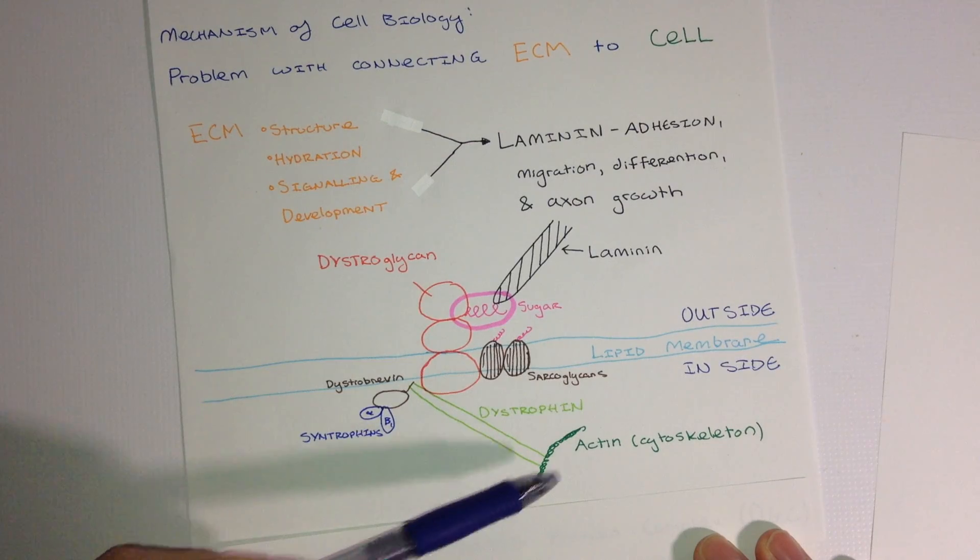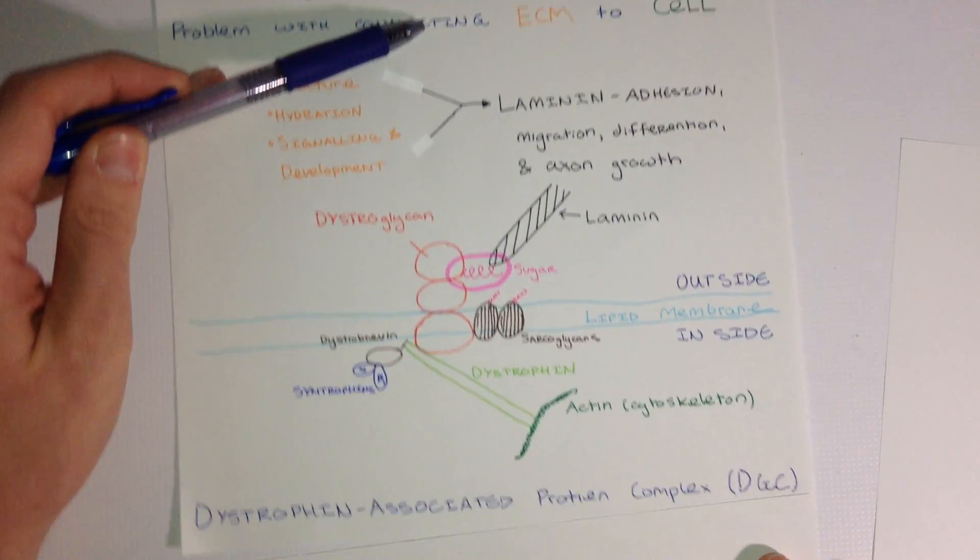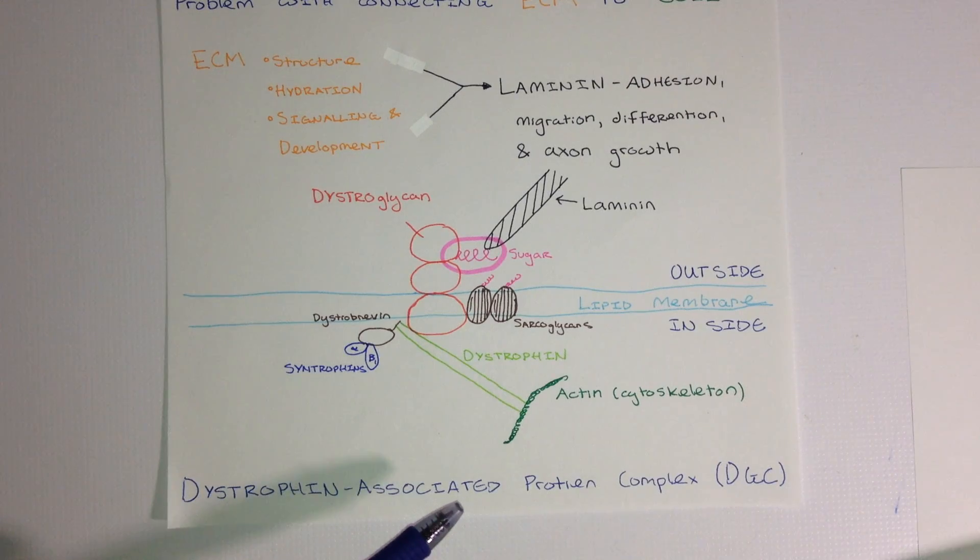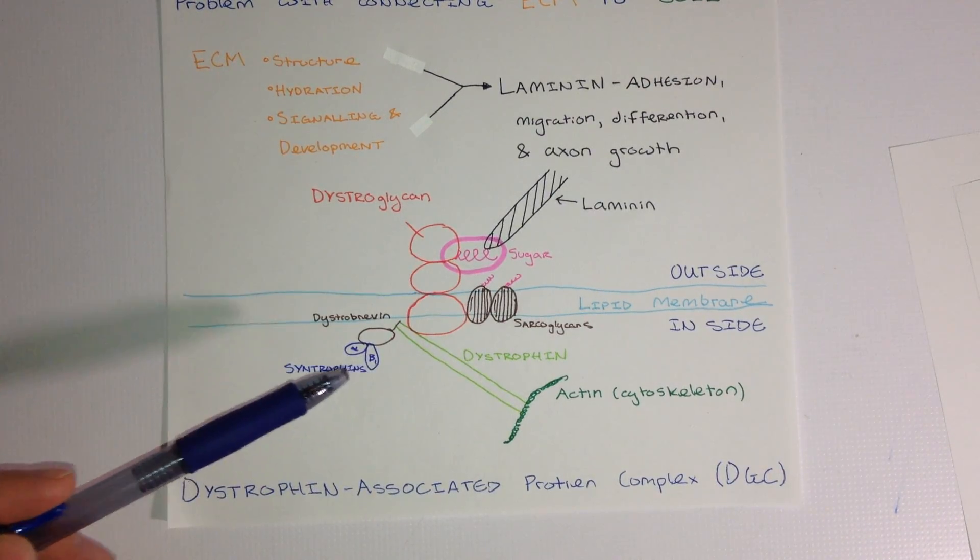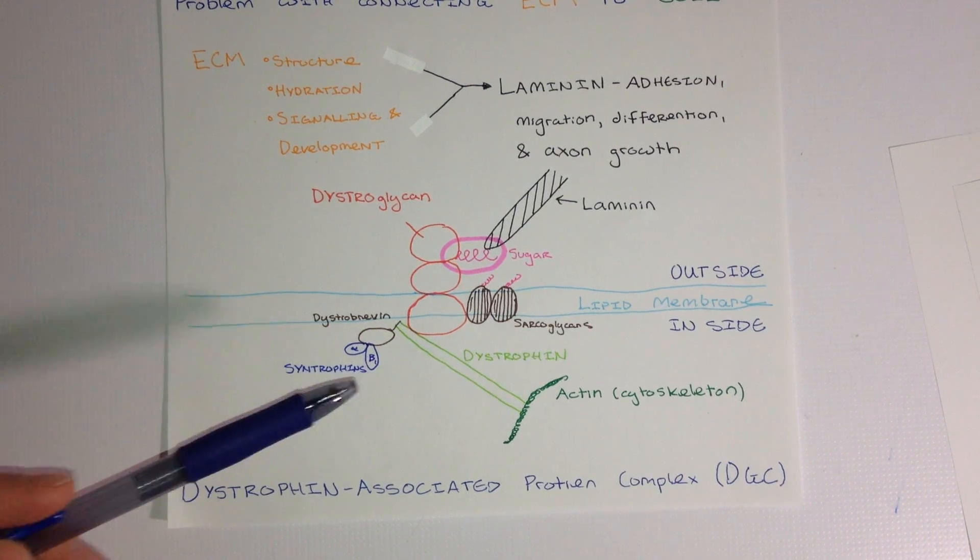This whole entire complex is known as the dystrophin-associated protein complex. And a mutation in any one of these proteins can lead to muscular dystrophy.